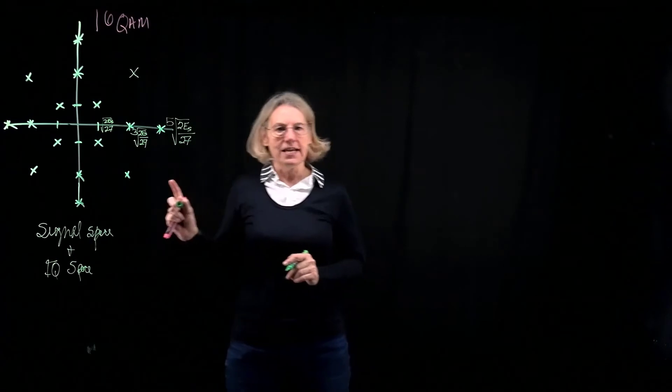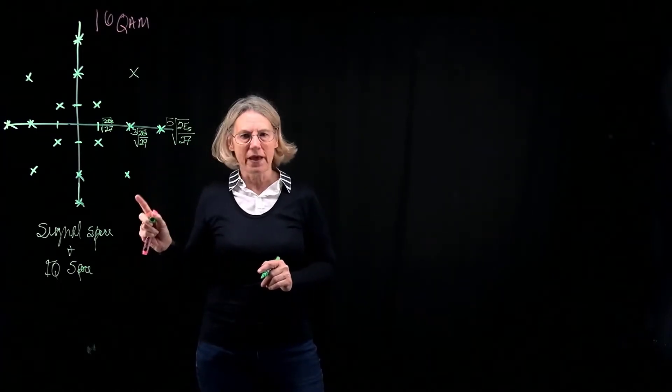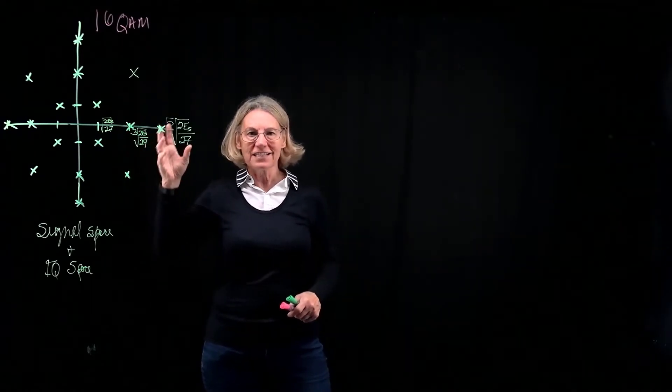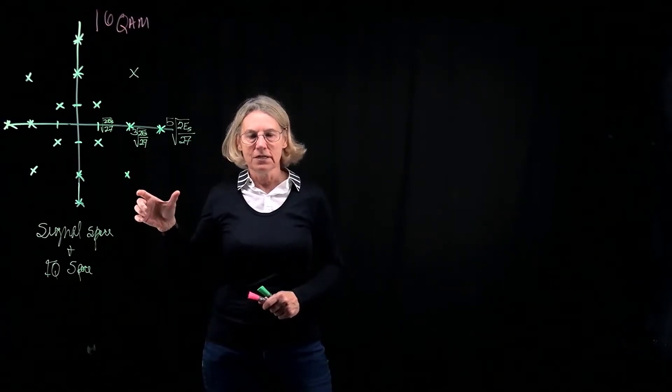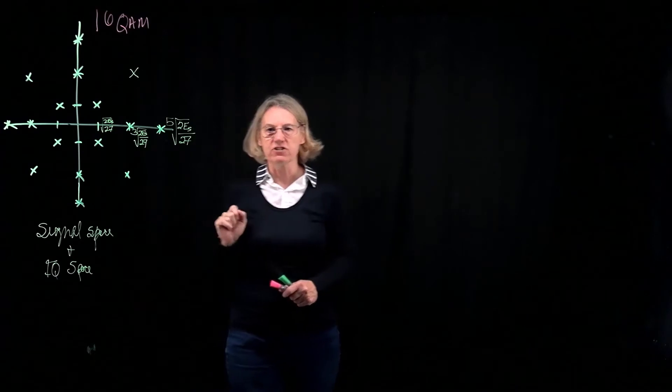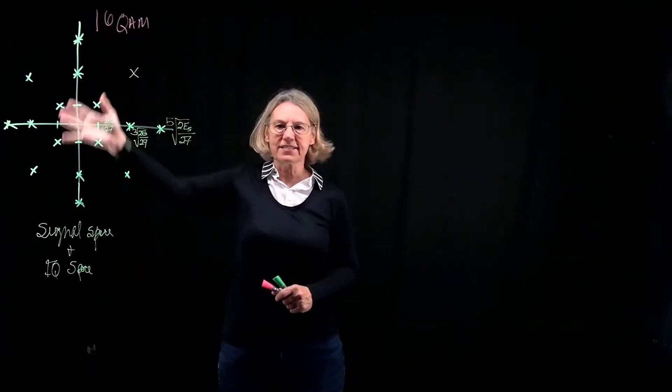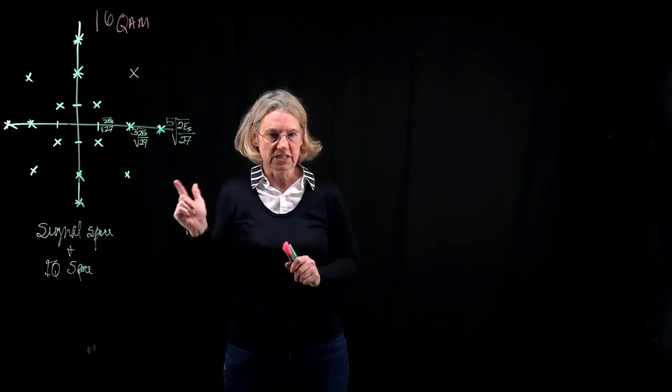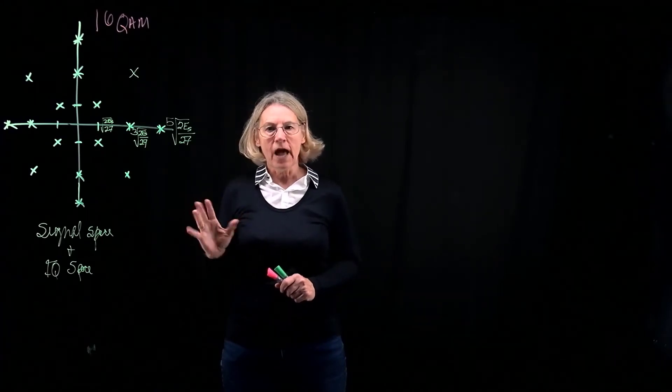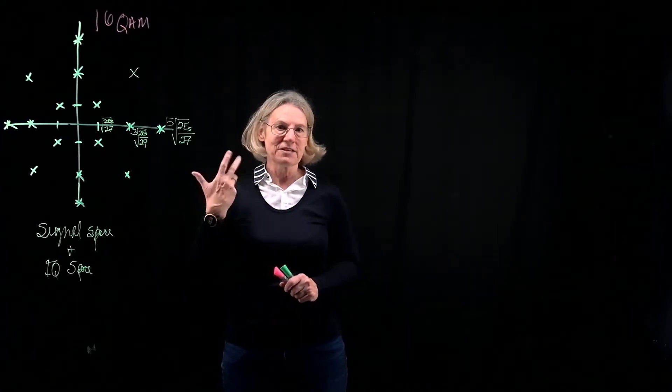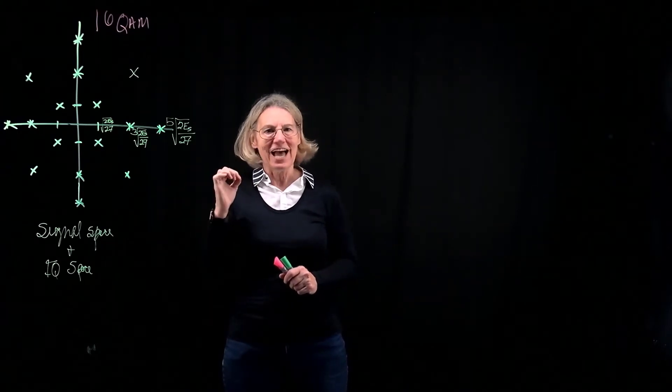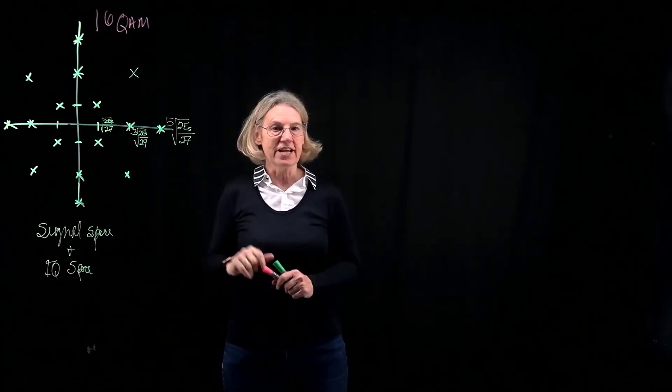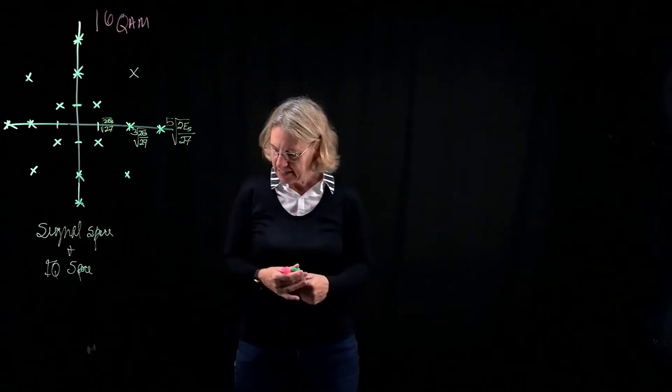So the idea is that if this is truly signal space, then the definition of signal space is that the vector that represents the signal has its length, which is related to the energy of that signal. So ES here represents the average energy per symbol. So if I were going to take these 16 points and calculate the energy for each one of these points, the length squared of each one of these vectors, and sum them up, I would get 16 times ES. So that the average, when I divide by 16, I would get ES. So let's just take the time to validate that this is indeed a good representation in signal space. So how do we do that? How do we validate the signal space representation?